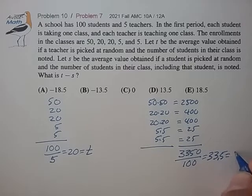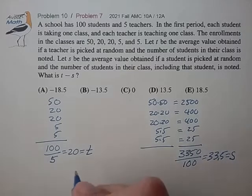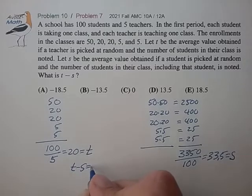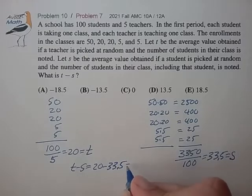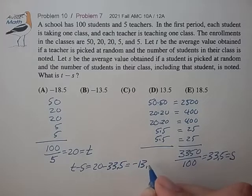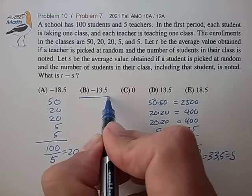We want to calculate T minus S. That's 20 minus 33.5. That's minus 13.5 for choice B.